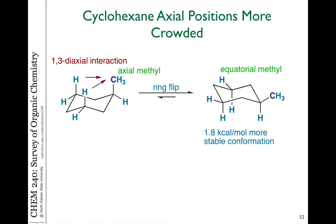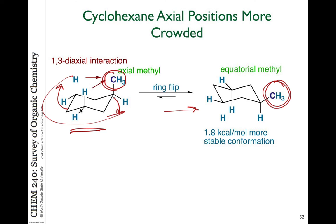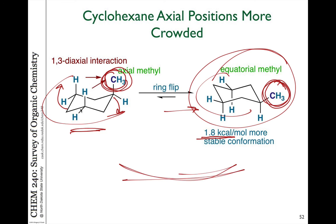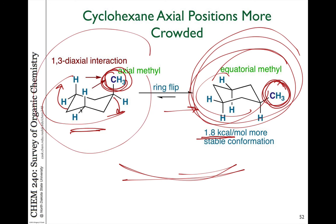Now let's take a look at a cyclohexane structure with substitution on it. Methylcyclohexane has a CH3 group, and as we saw from the models, if that is positioned axial — straight up or straight down — that's a more sterically crowded position than equatorial. If you take this structure and flip this side down and this side up to get the other chair structure, the methyl group becomes equatorial. The difference in these two structures is that in one the CH3 is axial and in the other it's equatorial, so the equatorial one is more stable, lower in energy by about 1.8 kilocalories per mole.